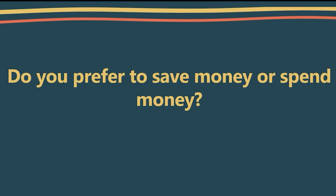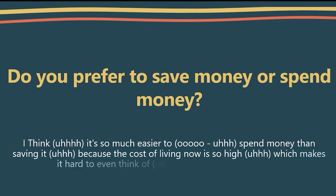Now let's go over an IELTS question in part one and answer it in three different ways. Pay attention and tell me which one sounds better. The question is: do you prefer to save money or spend money? Here is the first answer: 'I think it's so much easier to spend money than saving it, because the cost of living now is so high, which makes it hard to even think of putting some money aside.' As you can see, there are lots of disfluencies — it takes a long time to formulate thoughts.